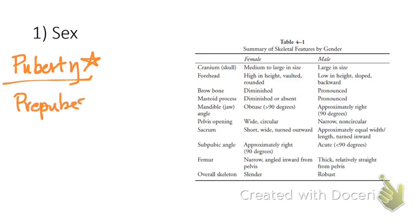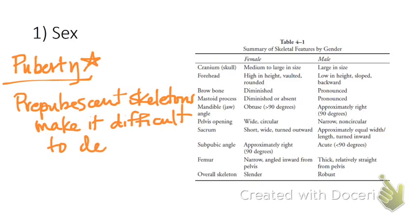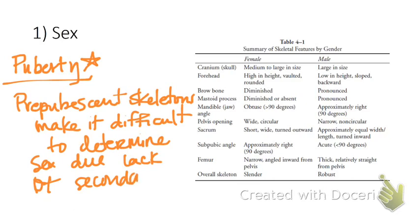So if we have prepubescent skeletons, it tends to make it a lot harder to determine sex because they may not be showing those secondary sex characteristics that men and women show after they hit puberty. So this becomes harder. For whatever reason, there's other things that could make this hard too. But essentially, it's either a lack of secondary sex characteristics.